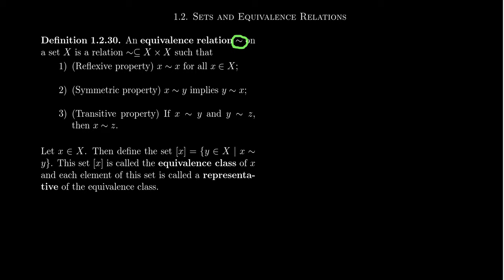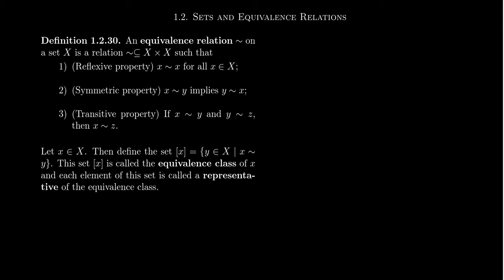An equivalence relationship is going to be a relationship on a single set X. That means it's a subset of X cross X — it always relates things from the same set to another element of that set. It's a relationship on a set with itself that satisfies three properties, which we call the axioms of an equivalence relation. Without one of them, it's not an equivalence relationship.